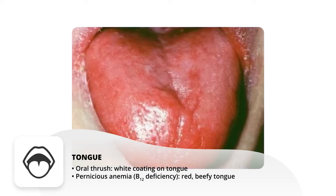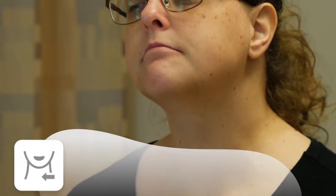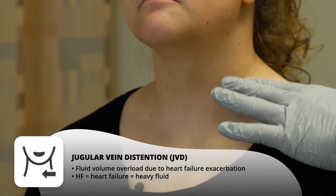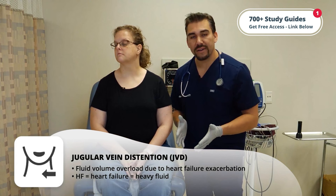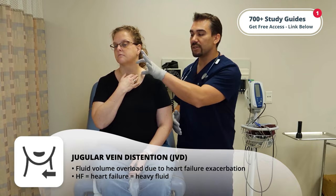Moving on to the neck, one of the biggest assessments is for JVD — jugular vein distension. This is typically for our fluid volume overload patients who are in heart failure exacerbation, which is basically worsening heart failure. Just remember: HF for heart failure, HF for heavy fluid. If your patient is reclined, it'll put a lot more pressure and cause it to protrude more.